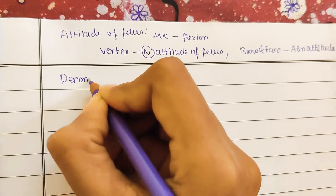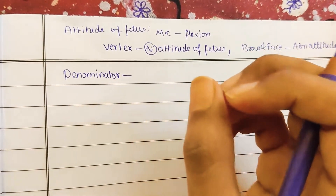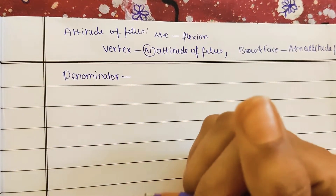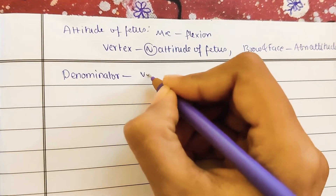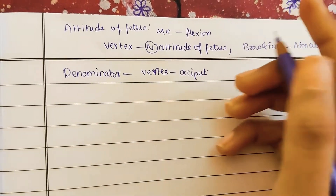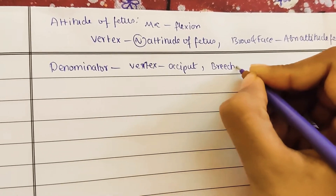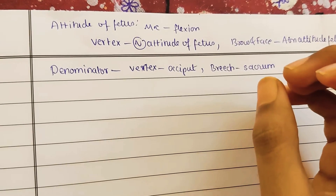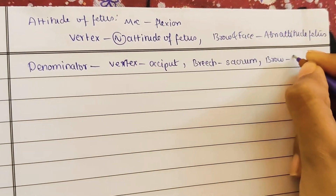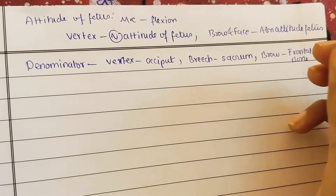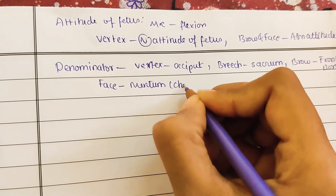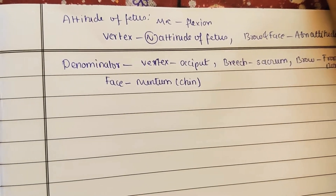Denominator is the bony point of reference on the presenting part which comes in relation to the maternal pelvis. In the case of vertex, the denominator is the occiput, because vertex lies between the occiput and the posterior fontanel. In breech position, the denominator is the sacrum, because the buttocks are coming down. In brow position, the denominator is the frontal bone or frontal eminence. In face presentation, the denominator is the mentum, which is the chin.